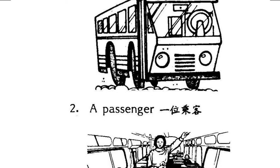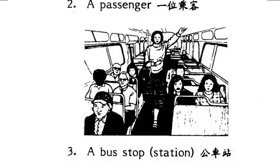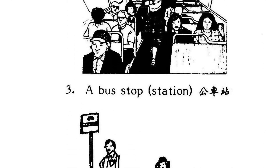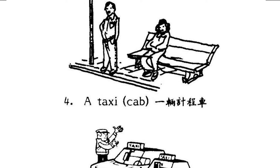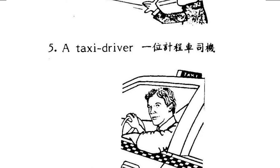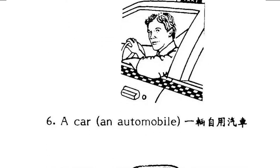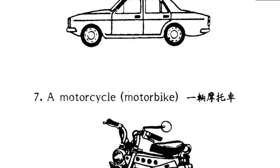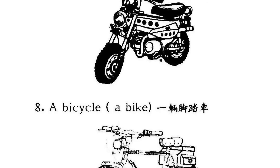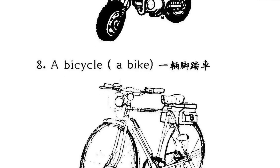Two, a passenger. Three, a bus stop. A bus station. Four, a taxi. A cab. Five, a taxi driver. Six, a car. An automobile. Seven, a motorcycle. A motorbike. Eight, a bicycle. A bike.